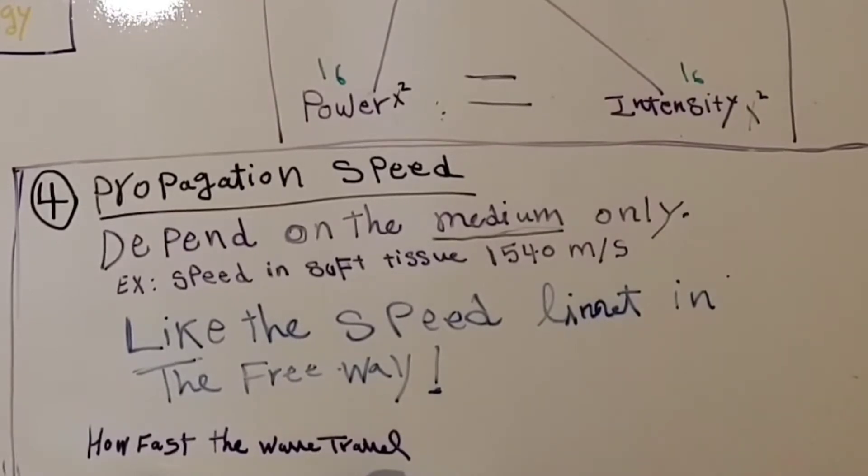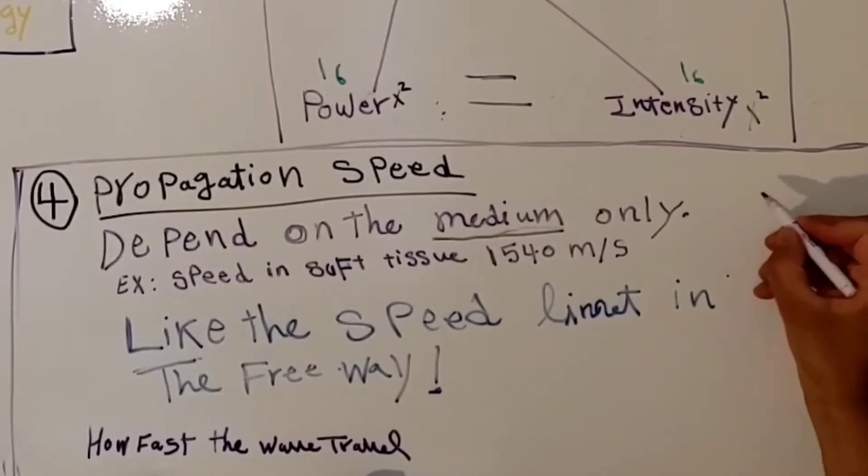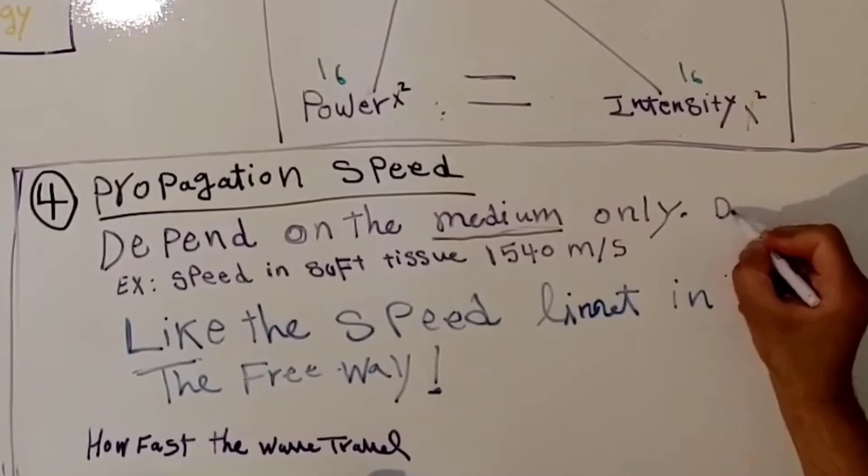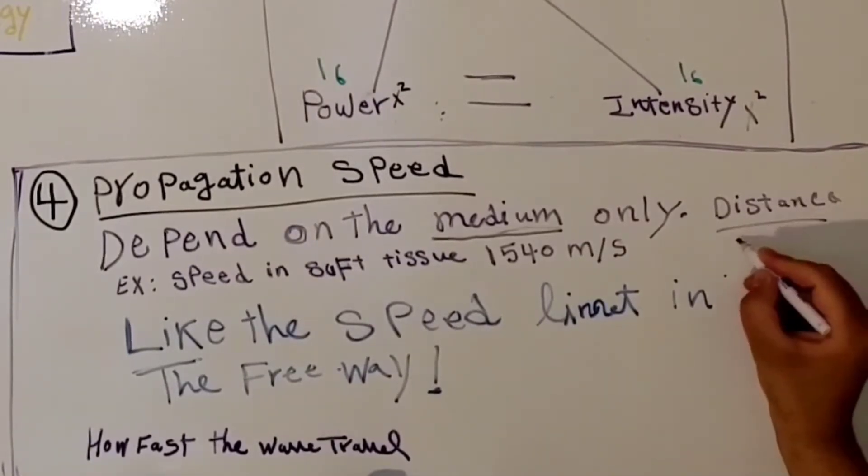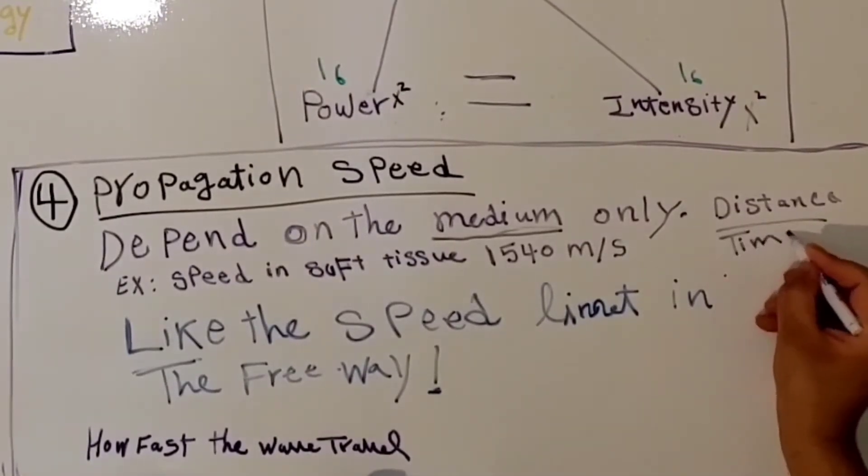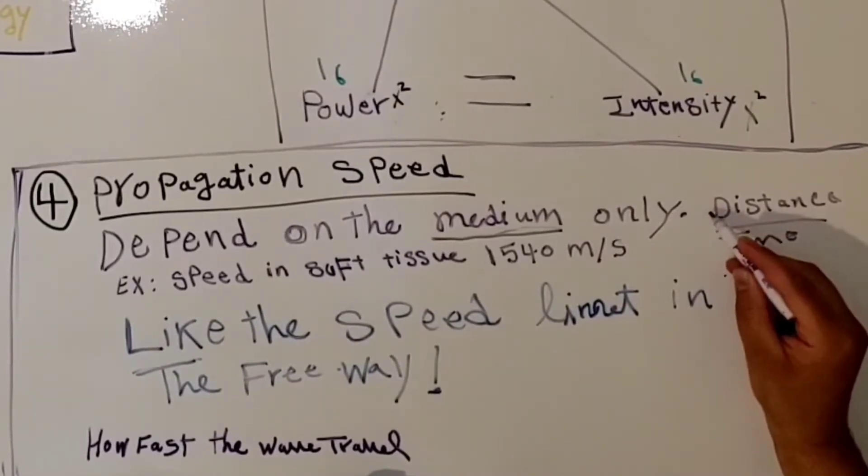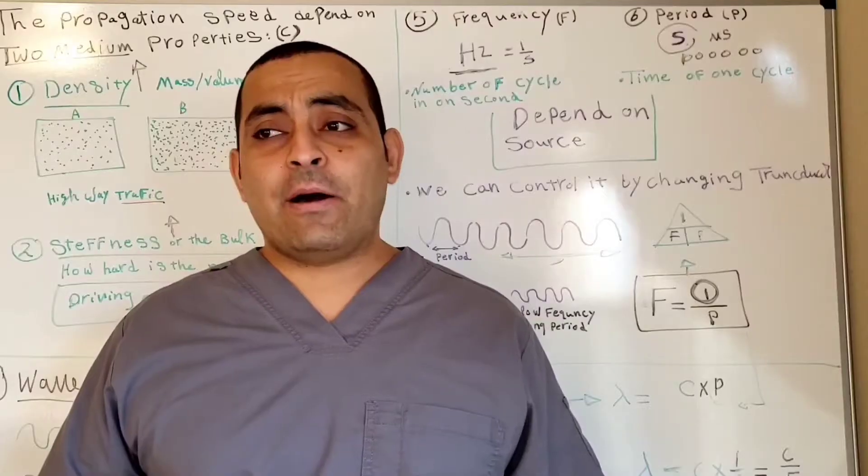Why is that? Because we know that speed equals distance divided by time. That's why we can use any unit of distance divided by any unit of time.